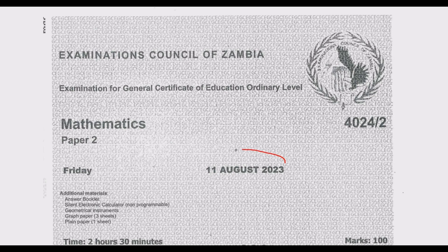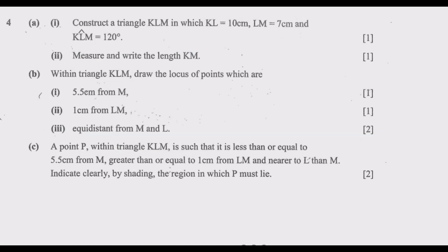Welcome viewers to the fourth episode in a series of 12 episodes focused on the August 2023 mathematics paper 2. In the first three episodes we covered questions 1 through 3 — check our YouTube channel playlist for those. It is important that you go through and understand the concepts, not memorize them. If you understand the concepts, mathematics becomes very easy because the questions are the same, just the numbers change.